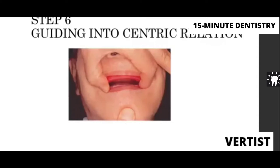First, you're going to guide or train the patient to close into centric. At this point, you have already recorded the vertical dimension of occlusion — the maxillary and mandibular rims are adjusted, evenly touching on both sides, with no gap when the patient closes. Now you're going to train the patient to close properly into centric relation. One method is the operator guiding the patient's lower jaw, but that may be a little difficult at the undergraduate level.